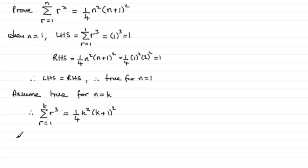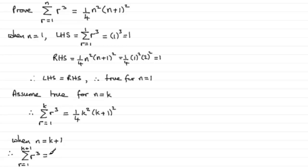We now need to check it out for when n equals k plus 1. So when n equals k plus 1, the summation of r cubed going from r equals 1 to k plus 1 is going to equal the first k terms — that's sigma of r cubed going from r equals 1 to k — plus the k plus 1th term, which is k plus 1, all cubed, added on at the end.